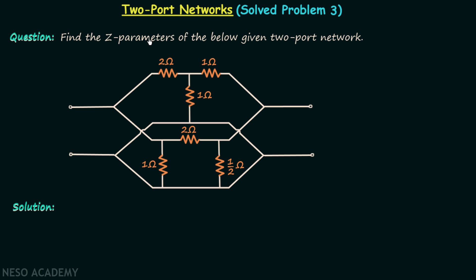Find the Z parameters of the given two-port network, which is a combination of two two-port networks. The first is a T network, referred to as network NA, and the second is a PI network, referred to as network NB. We are required to find the Z parameters of this combination of NA and NB.